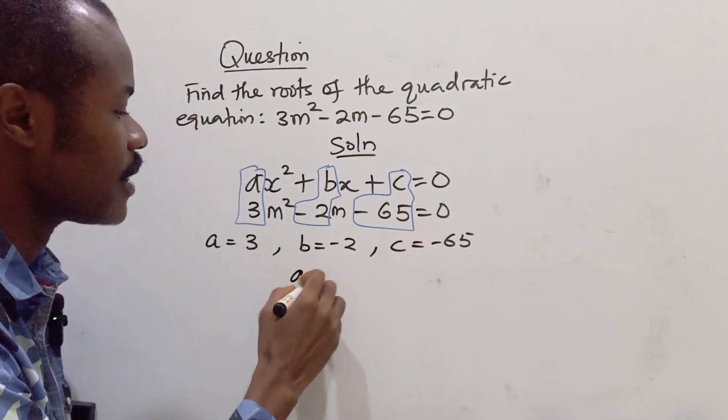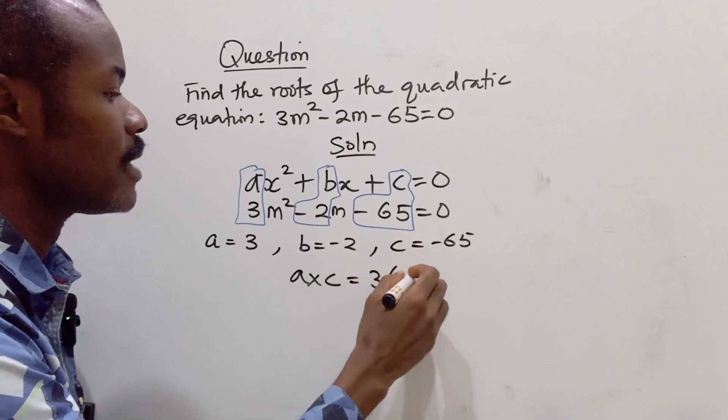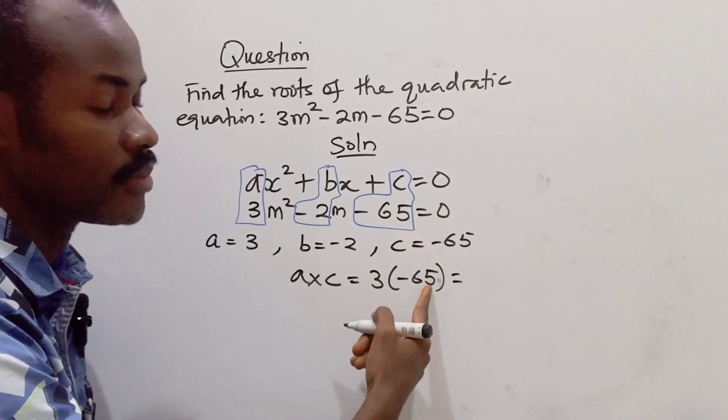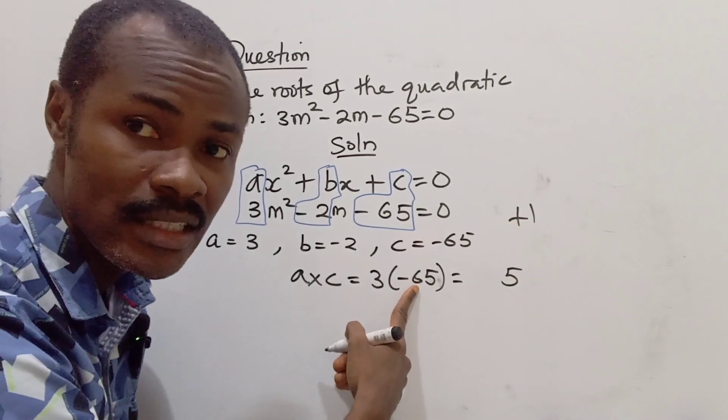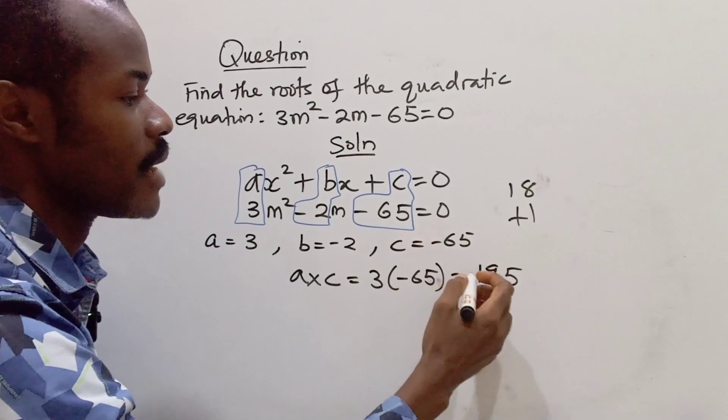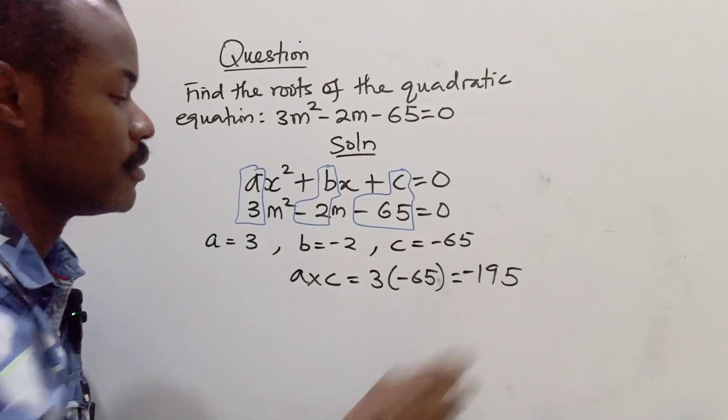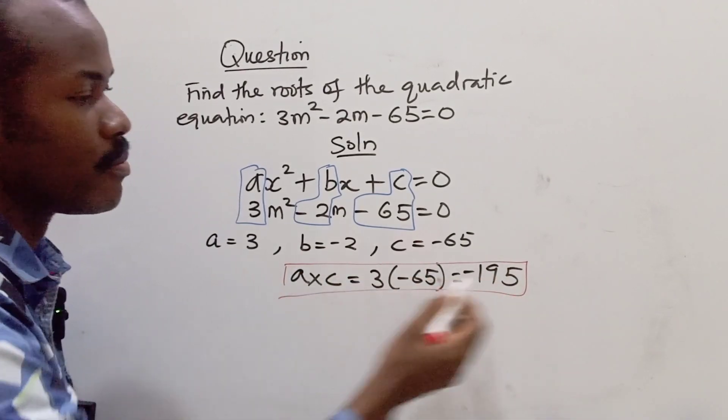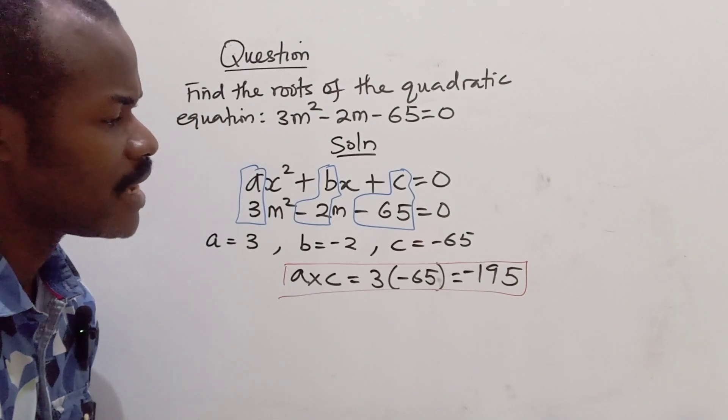The next step is you want to multiply a times c. So what's our a? Our a is 3, multiply by -65. This will give us 3 times 5 is 15, carry 1. 3 times 6 is 18, plus 1 is 19, and we have a minus here. So our ac gave us -195.